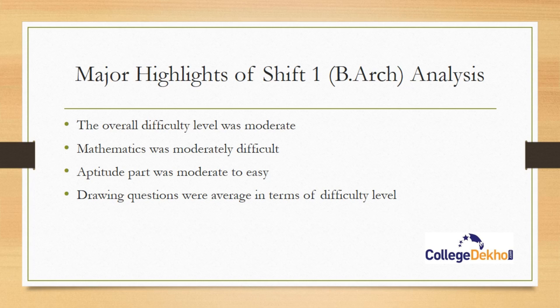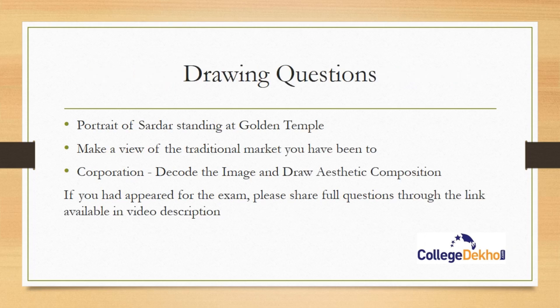The overall difficulty level of the paper was moderate — not too easy, but moderate in terms of difficulty. Mathematics was moderately difficult; it was not easy this time. The aptitude section was moderately easy, and drawing questions were average, or moderate, in terms of difficulty level.